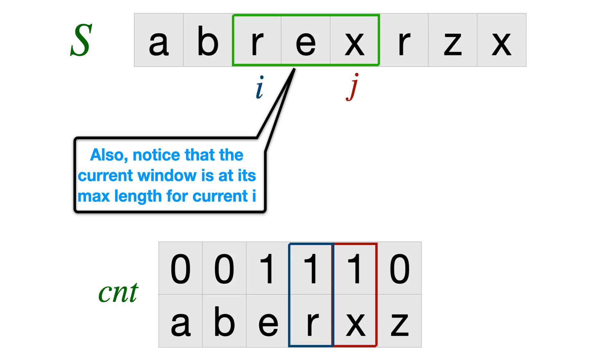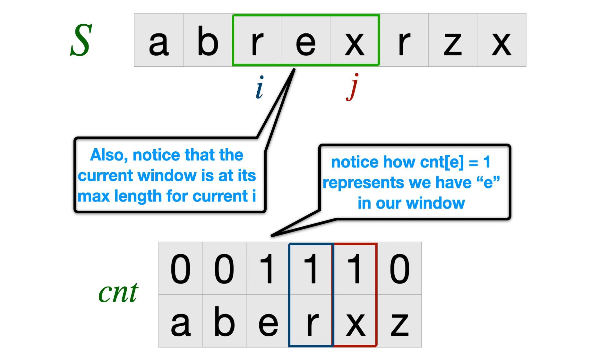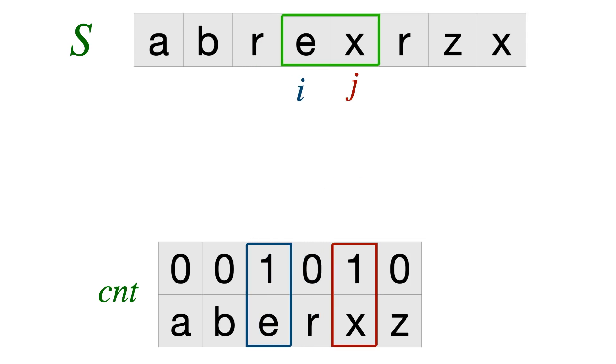So this ensures that for every i, we are always maintaining our window at the maximum length. And hence we are always ensuring we are covering all maximum or longest substrings for all indexes. So you can see that the count value of E is 1, count value of R is 1, count value of X is 1. Always, whatever our window is, the count values are representing how many times every character is happening. So now I have to move i in the forward direction because as we have seen, R is giving us some problem.